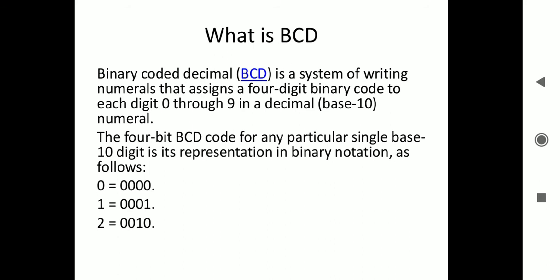In the decimal system, we are using 0 to 9 unique symbols. The 4-bit BCD code for any particular single base 10 digit is its representation in binary notation. For example, if you have to represent 0, we will take 0000, not 3 zeros or 1 zero. Because it is binary coded decimal, we will use 0000, 4 places.